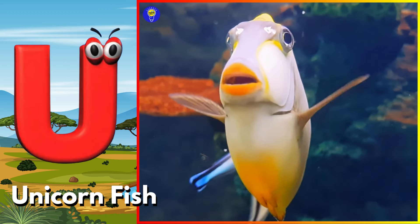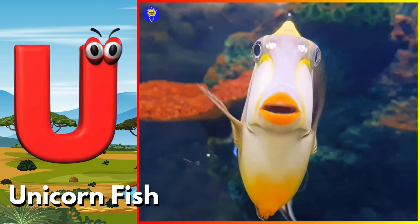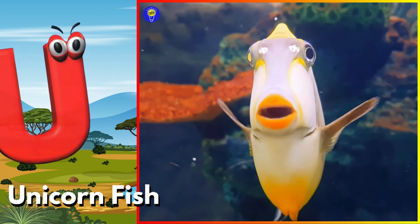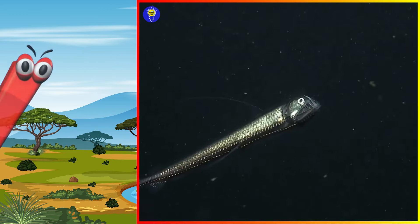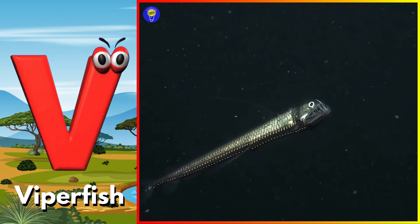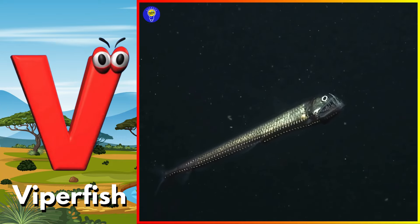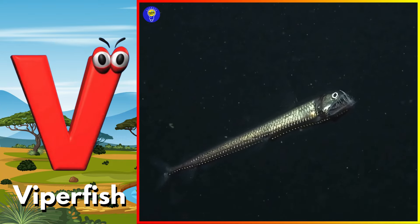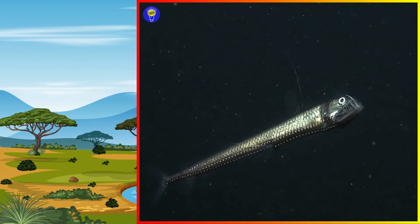U is for unicornfish. Uh, uh, unicornfish. V is for viperfish. V, v, viperfish.